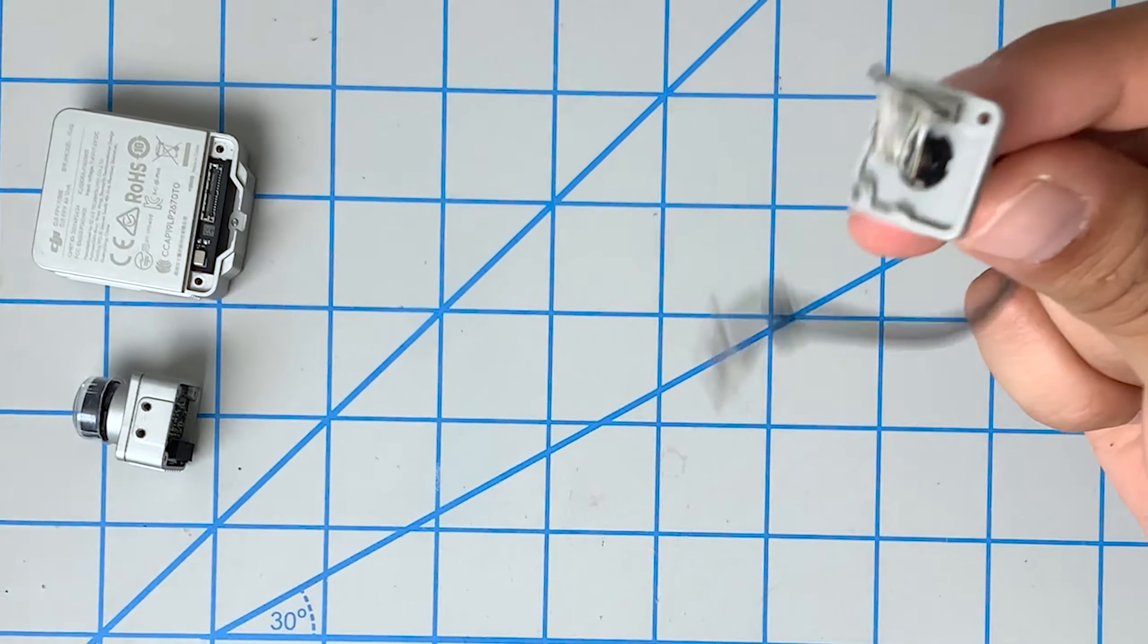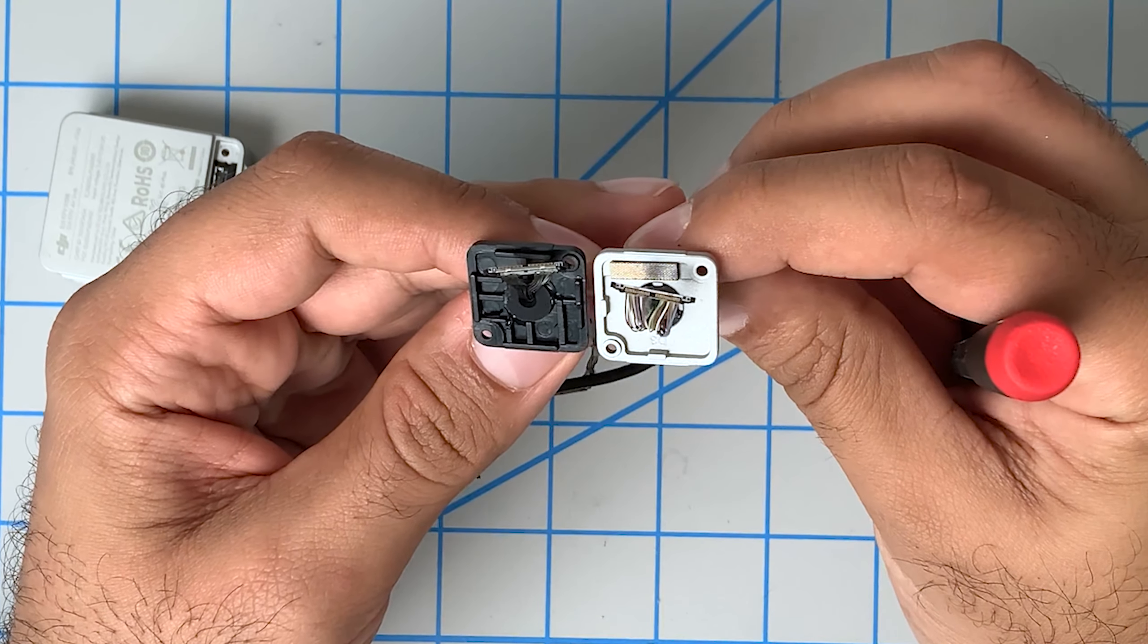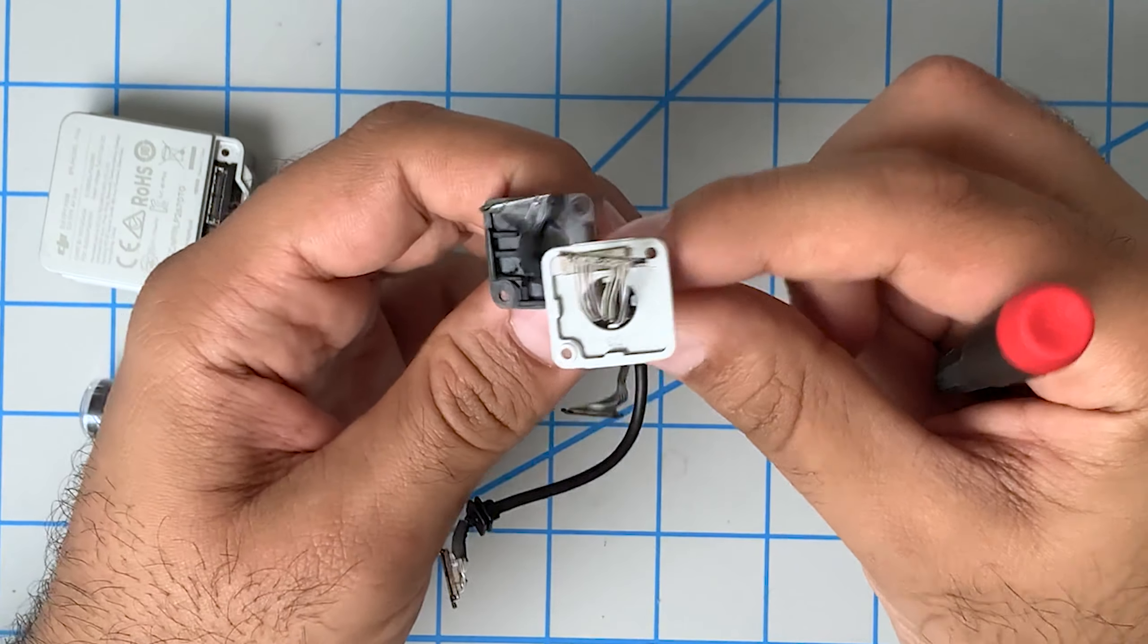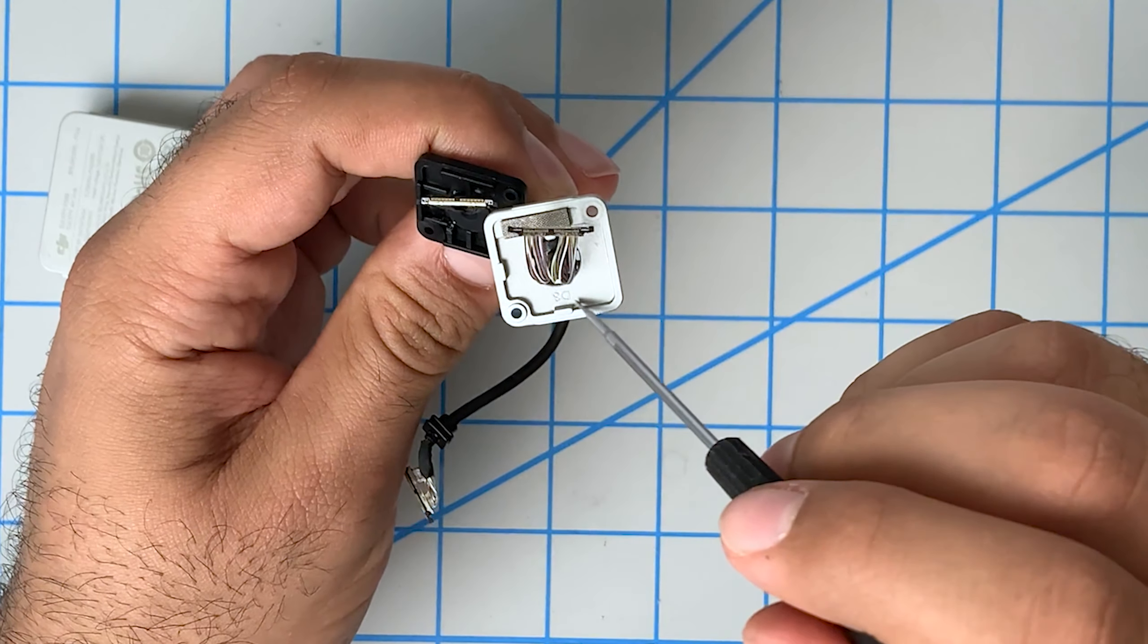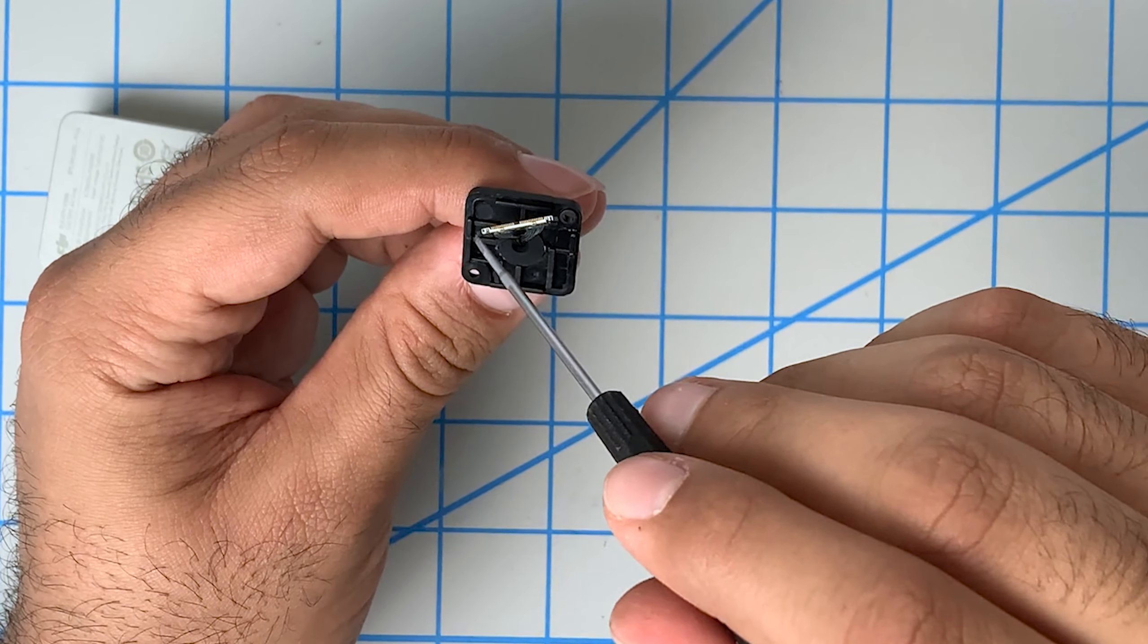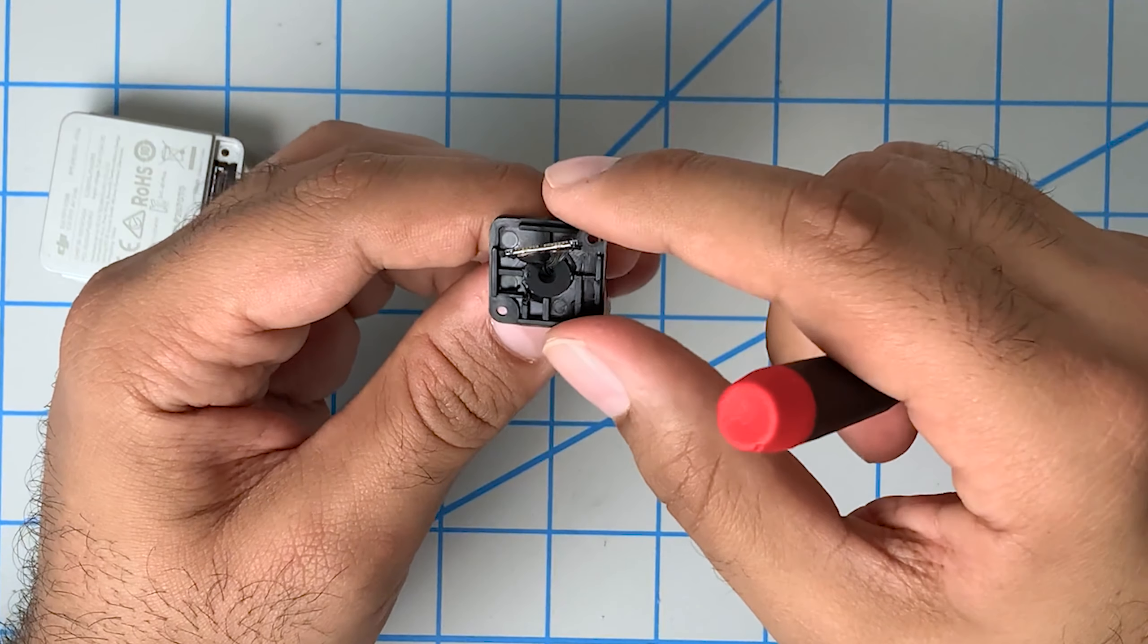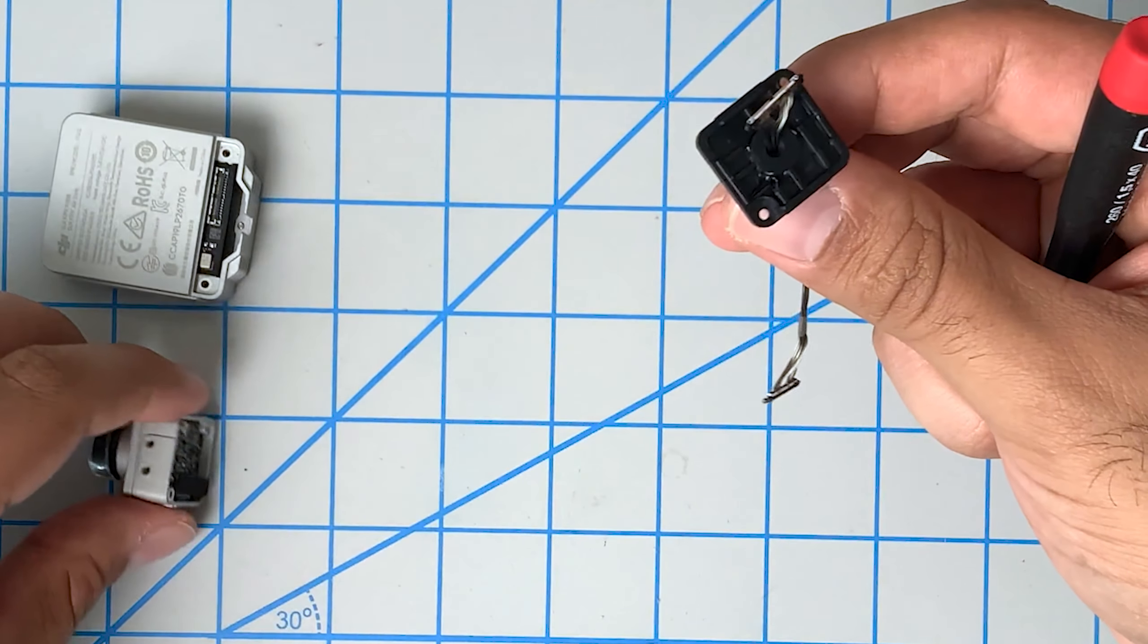So one thing to bear in mind is these two back plates are slightly different. You can see that on the original DJI one, it's very flat. Whereas on the Caddx Vista one, you have these little ribs. And these little ribs are actually what keep the cable installed in this.